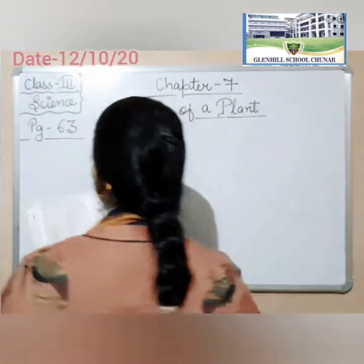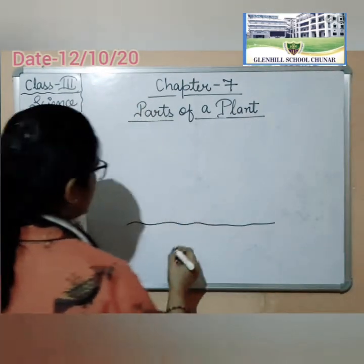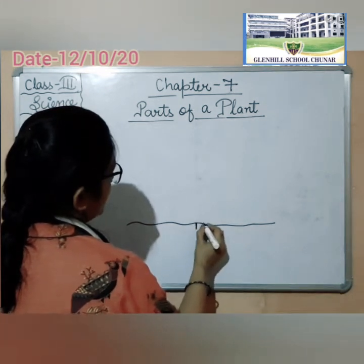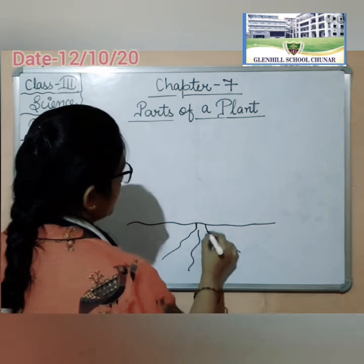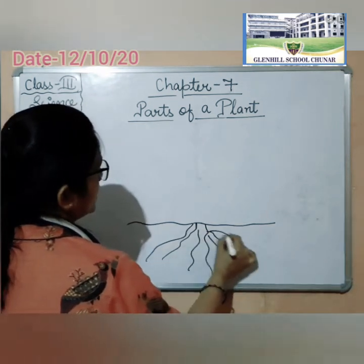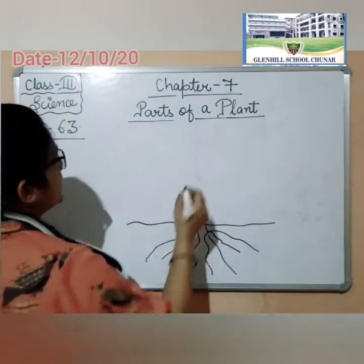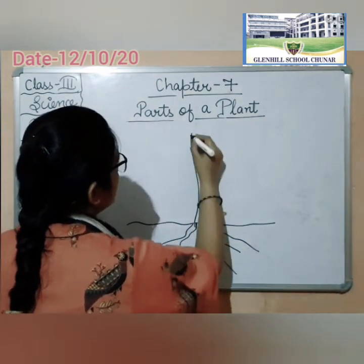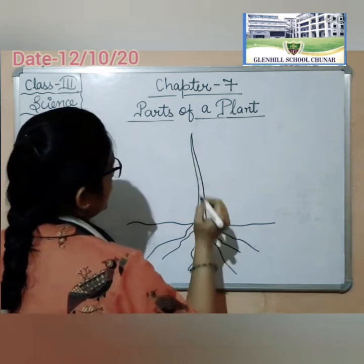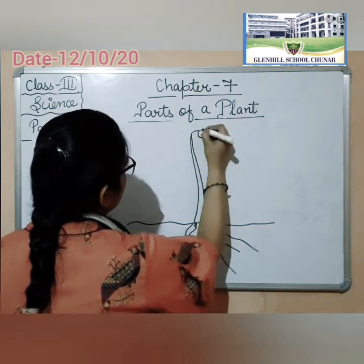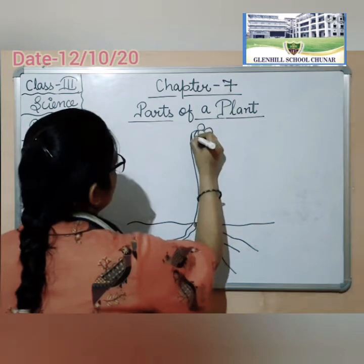Now let's see the diagram of the parts of a plant. This side — what is this part of the plant? It is the root. Yeh plant ki roots hai. And here above, it is the stem. And it is the flower.